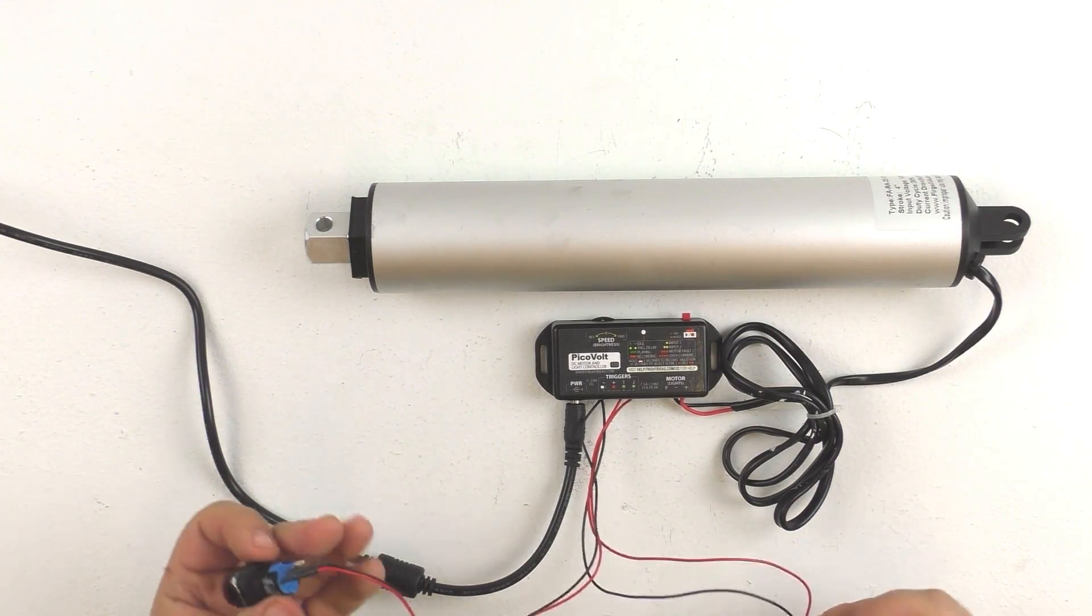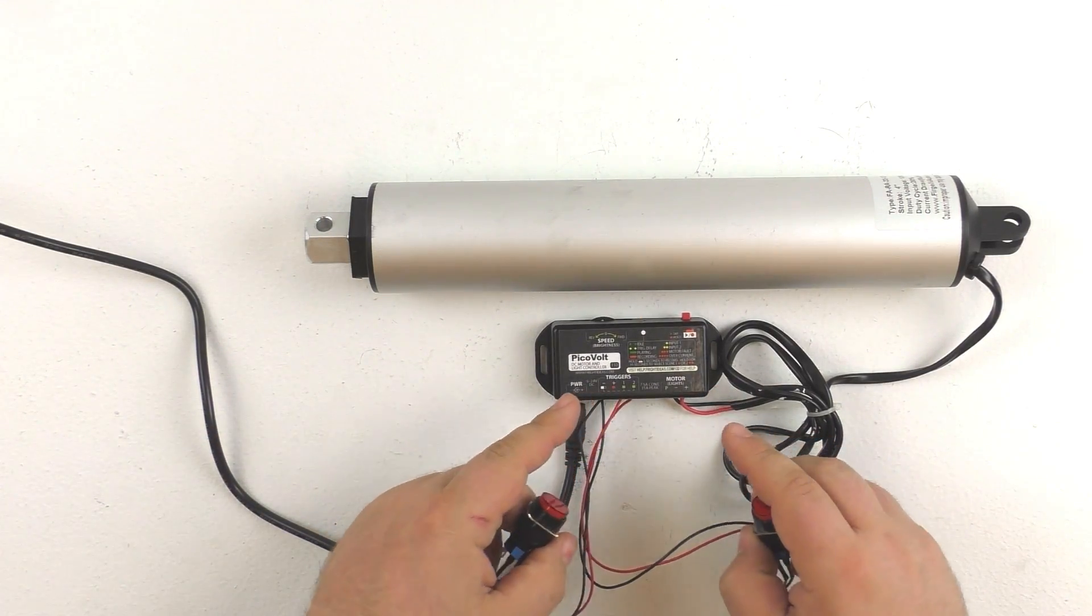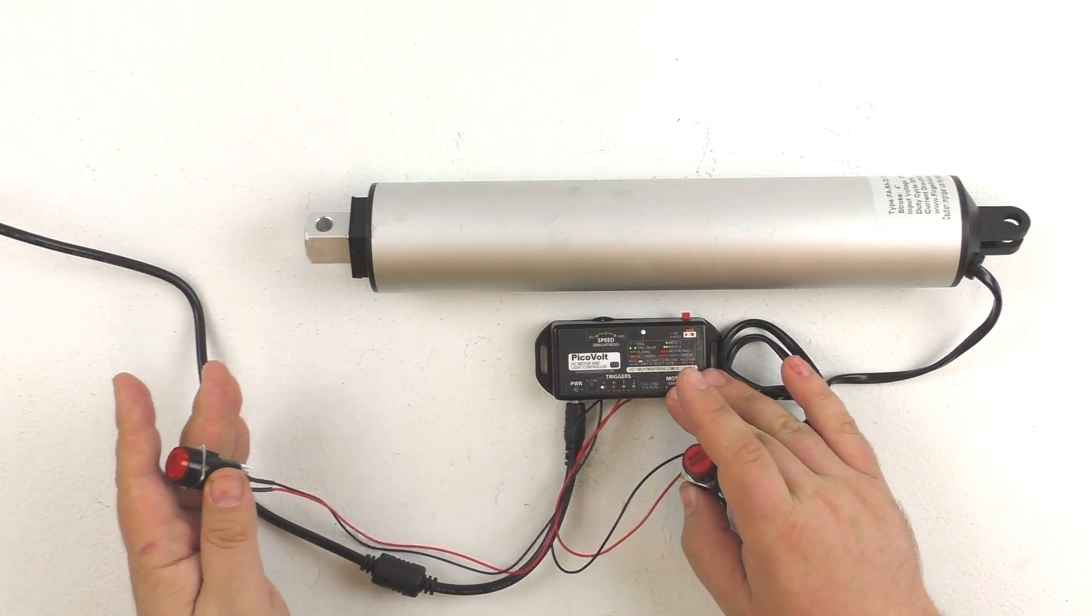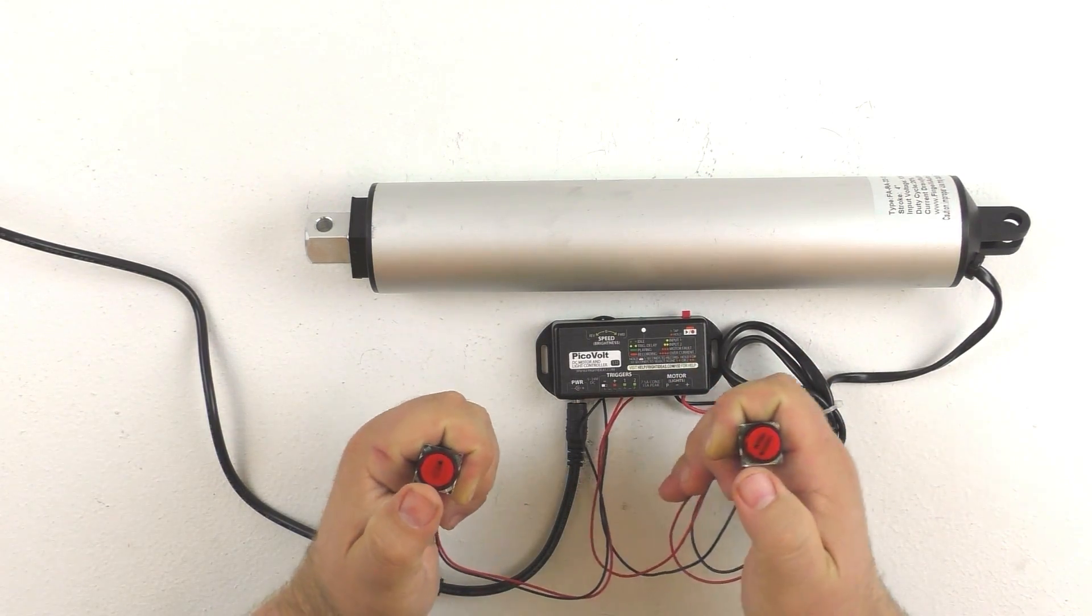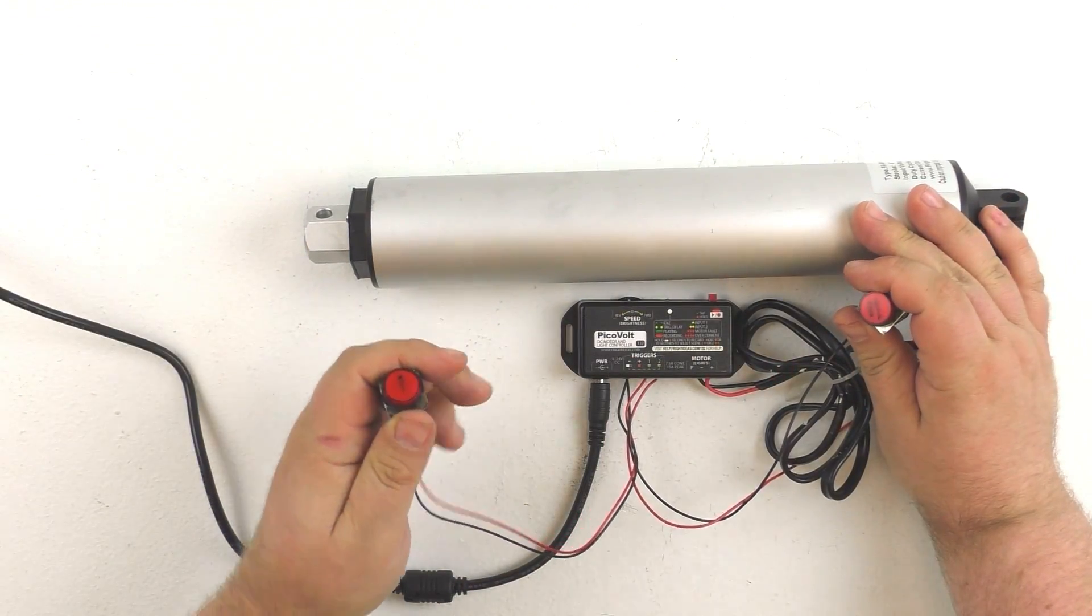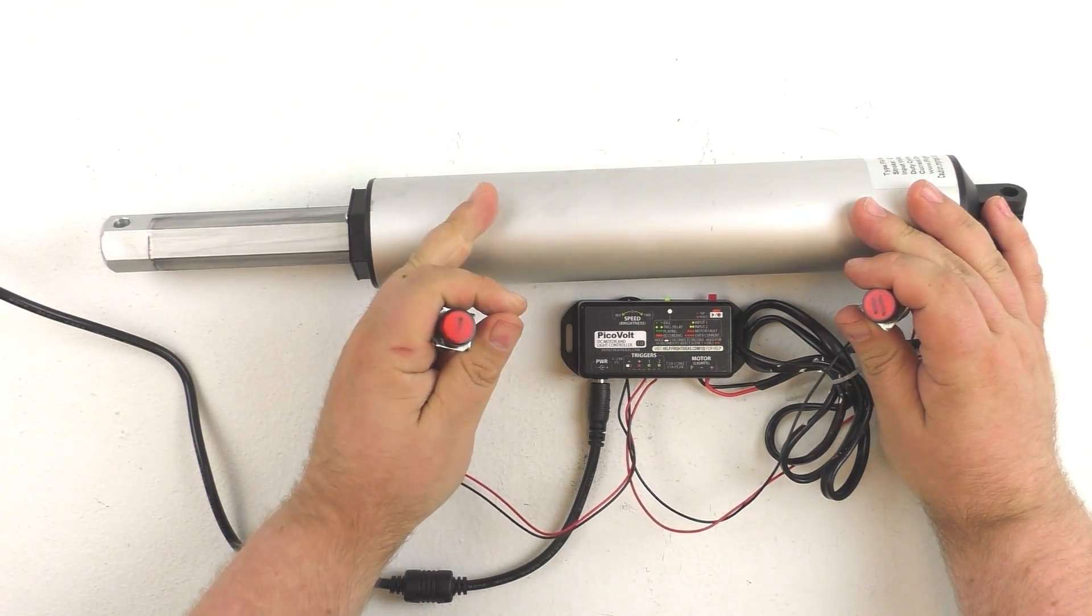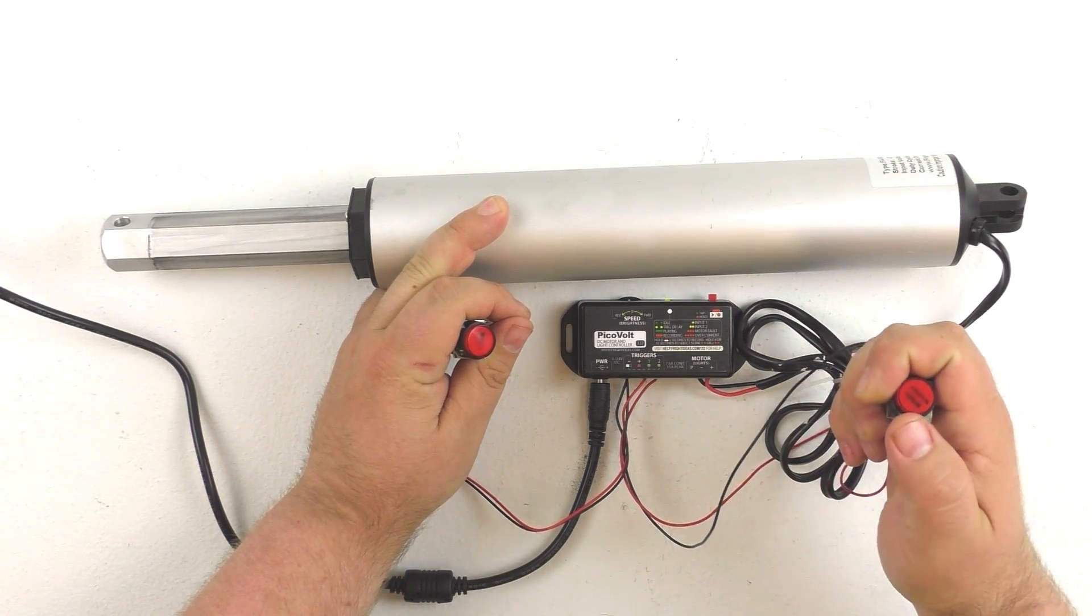Alright so we've now programmed into the two separate inputs two different animations. An extension for input one and a retraction for input two. So we can go ahead and test it out. So we can hit the number one button and the actuator will extend. Hit the number two button and the actuator will retract.